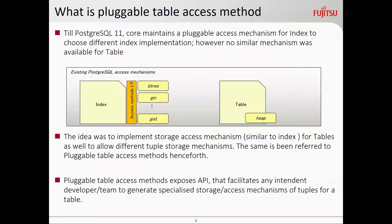So what is pluggable table access method? As you can see in the picture, at a very high level, until PG-11, there was a pluggable access method for indexes to choose different index methods — be it B-tree or GiST. But there was no similar method for the table AM. From the developer's point of view, there is an interface layer written on top of index methods which allows B-tree and GiST to use those interfaces, and allows developers to introduce new indexes as well.